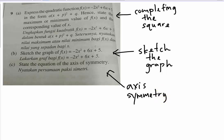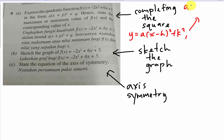Completing the square is just a method. The general form is y equals a times (x minus h) squared plus k. This is the general equation. The purpose of completing the square is to get the maximum or minimum point, which helps you sketch the graph. When a is positive, you get a minimum point at (h, k). When a is less than zero — that is, a is negative — you get a maximum point, also at (h, k).